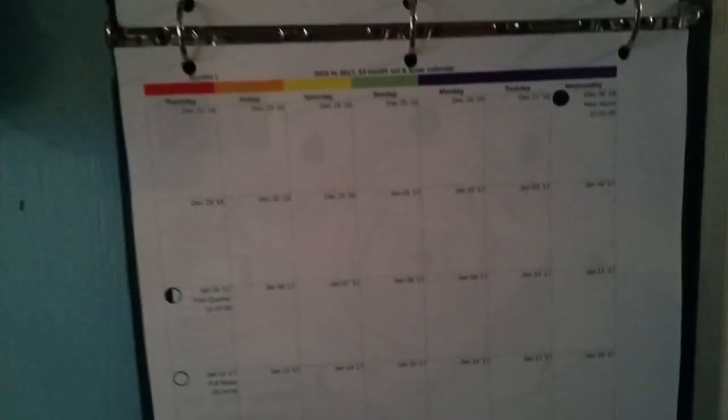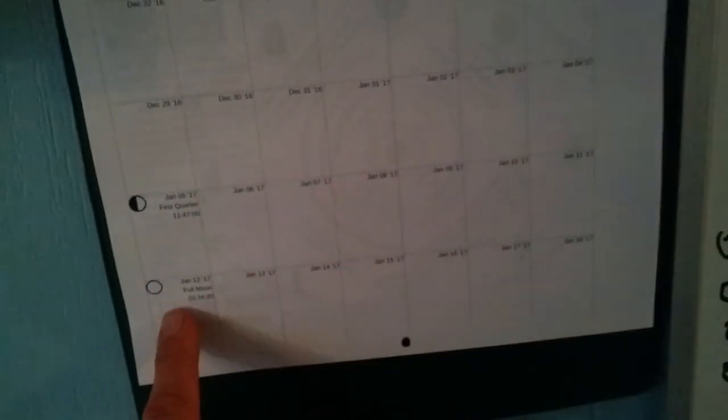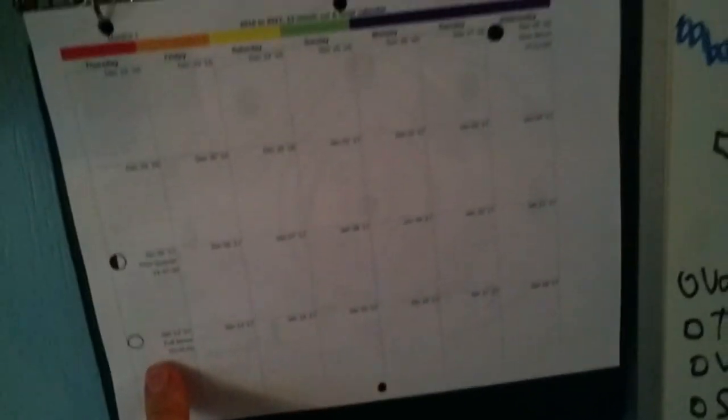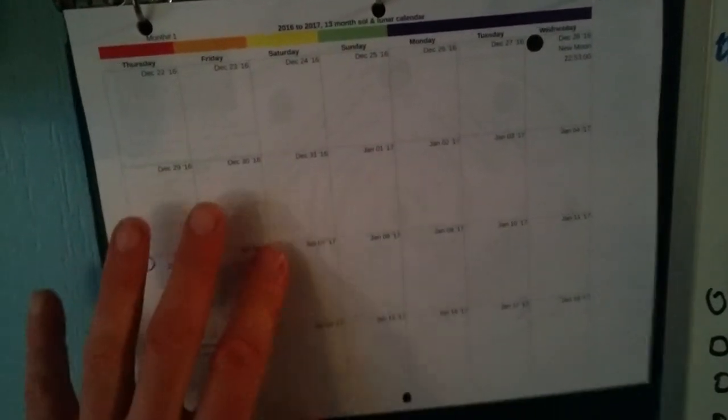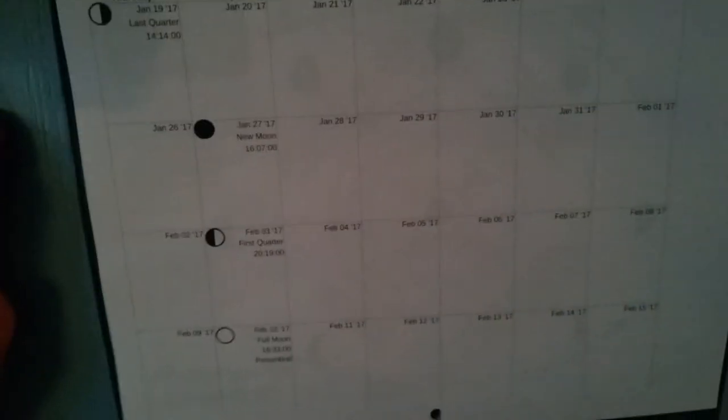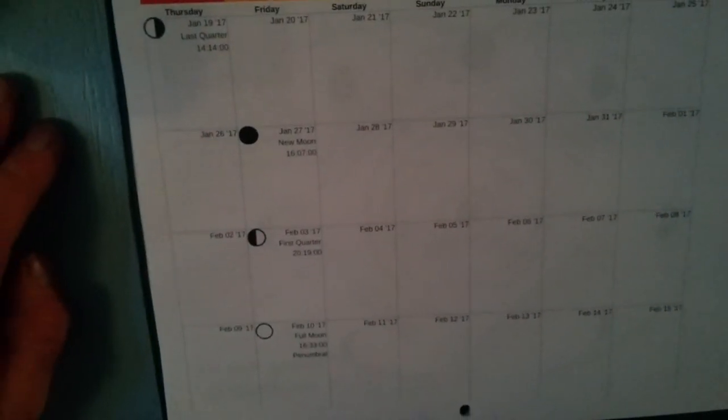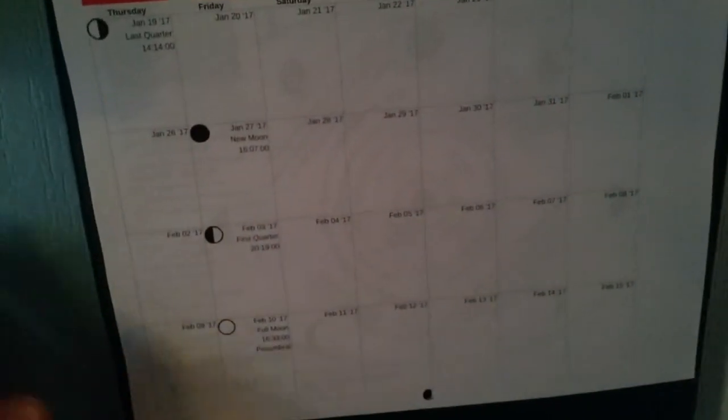I've put the moons on this calendar. The new moon, the first quarter moon, the second quarter moon or the full moon, and the third quarter moon, which isn't on this month. Now, not all of the moon phases are going to be shown in each month because one full moon phase takes 29 and a quarter days. There's only 28 days here.